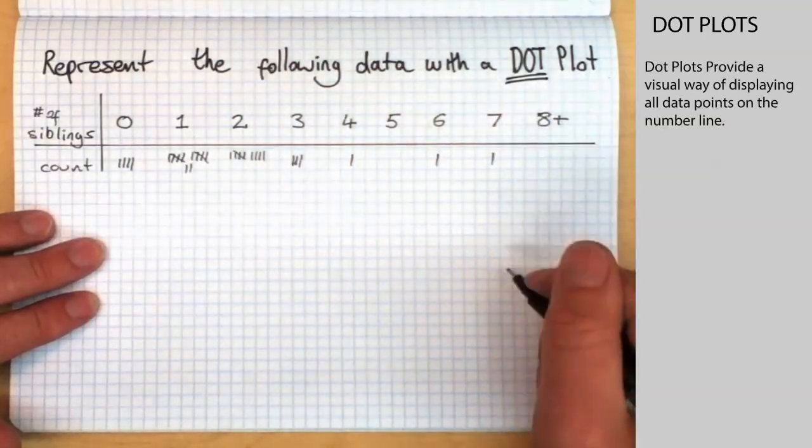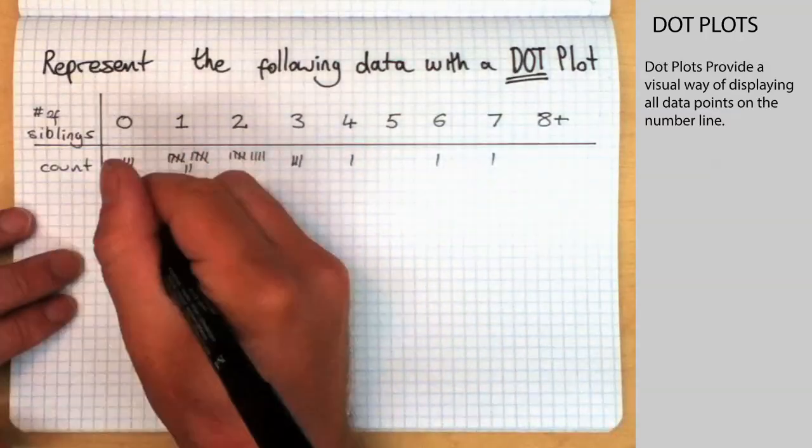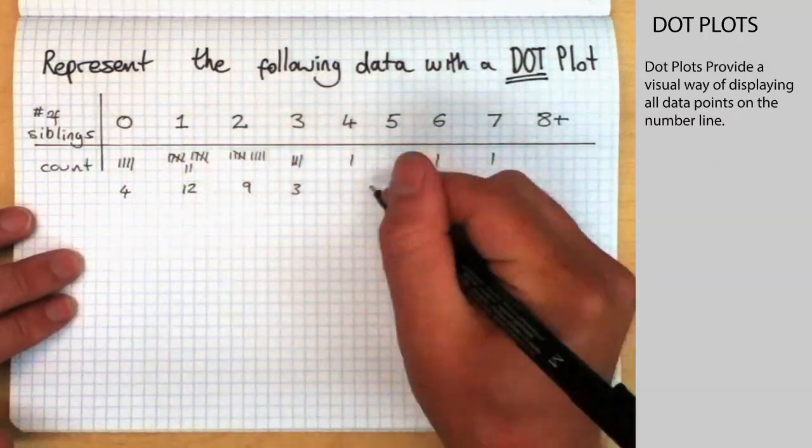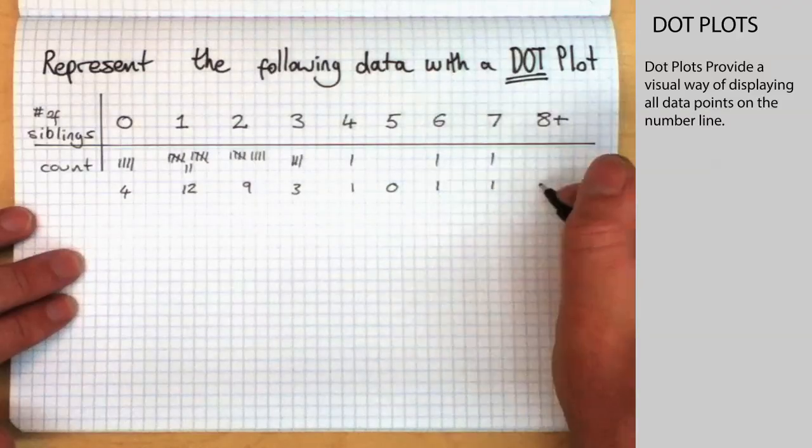One person has four siblings. No one has five siblings, but we have one person with six and one person with seven. And zero have eight or more.